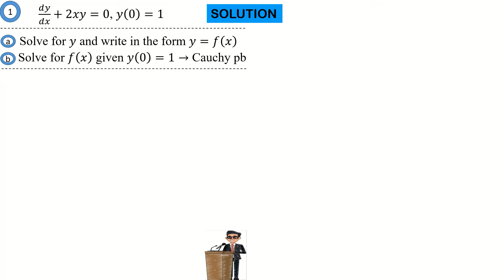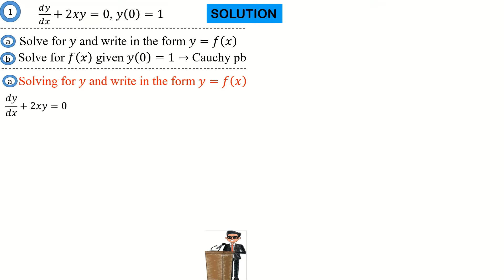Beginning with the first part — solving for y and writing it in the form y equals f(x). This is a first-order differential equation. It is also a variable-separable first-order differential equation, because we can separate the variables. If you rewrite the differential equation in this form, you can group dy and y together, and dx and x together, thus separating the variables. Since we can separate the variables, we now integrate both sides.